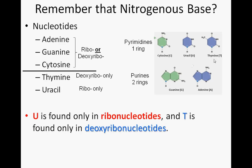The difference comes only in these two pyrimidines. Uracil can only attach to ribose, so you only see it in ribonucleotides and therefore only in RNA. Thymine is the opposite — it only attaches to deoxyribose, you only see it in deoxyribonucleotides, and you only find it in DNA molecules. So if you see uracil in a sequence, you know you're looking at an RNA molecule. If you see thymine in a sequence, you know you're looking at a DNA molecule.